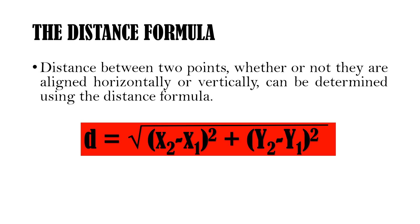The distance between two points, whether or not they are aligned horizontally or vertically, can be determined using the distance formula: d is equal to the square root of (x sub 2 minus x sub 1) squared plus (y sub 2 minus y sub 1) squared.